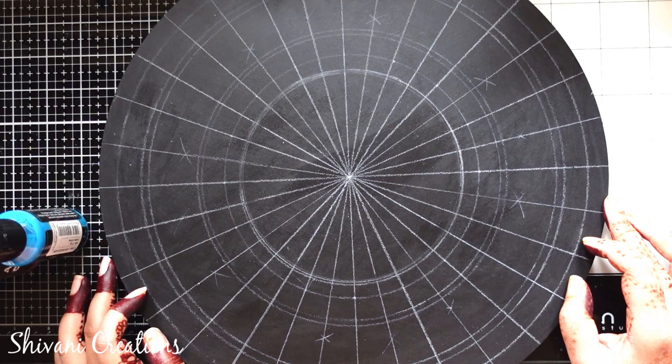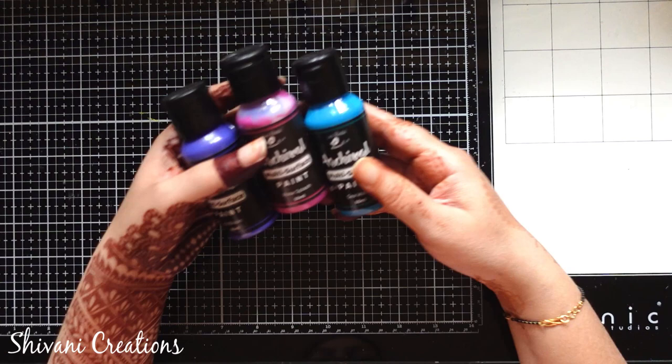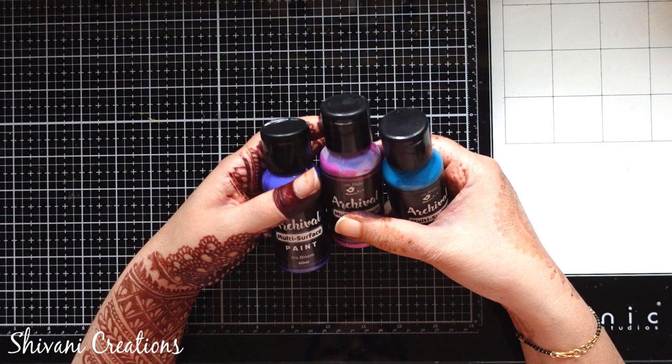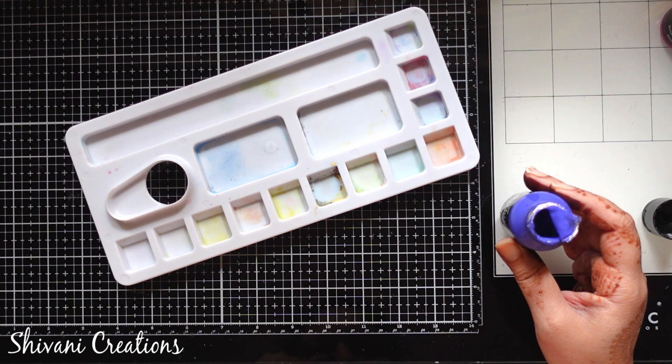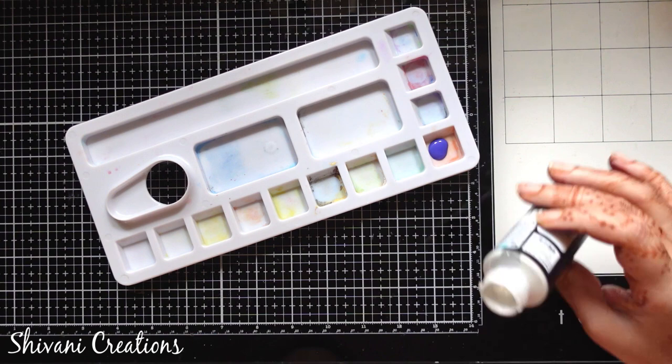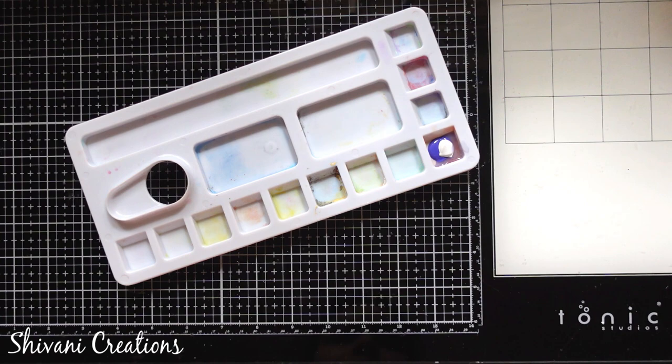It's time to start with our mandala work. So I will show you how I make my color. Here I am taking my archival multi-surface paint by Little Birdie and taking my color palette. These paints are having very nice consistency. If you find it little thick, you can add little drop of water, mixing white with this and creating a nice smooth paste. In this way I will create all my shades.